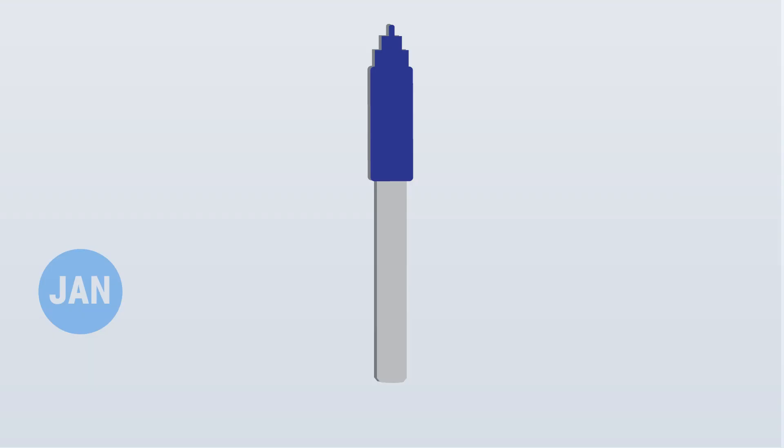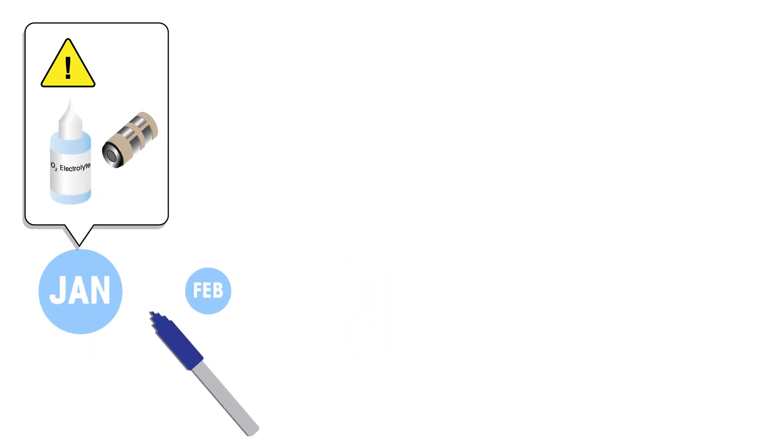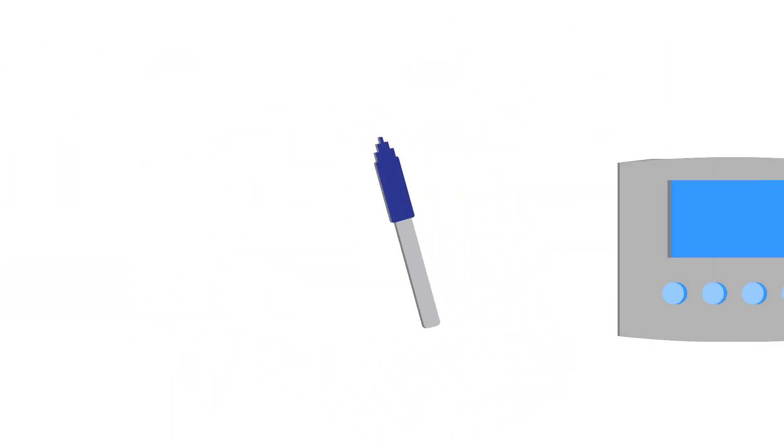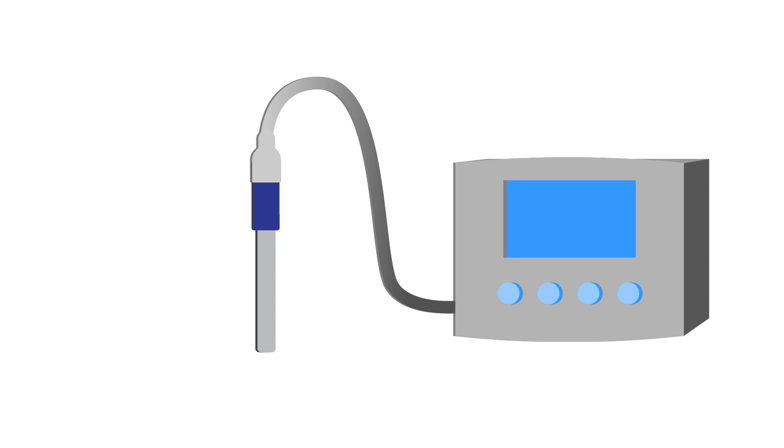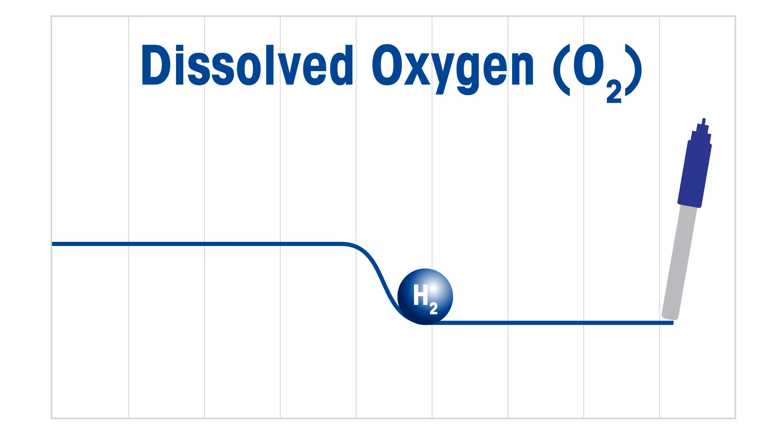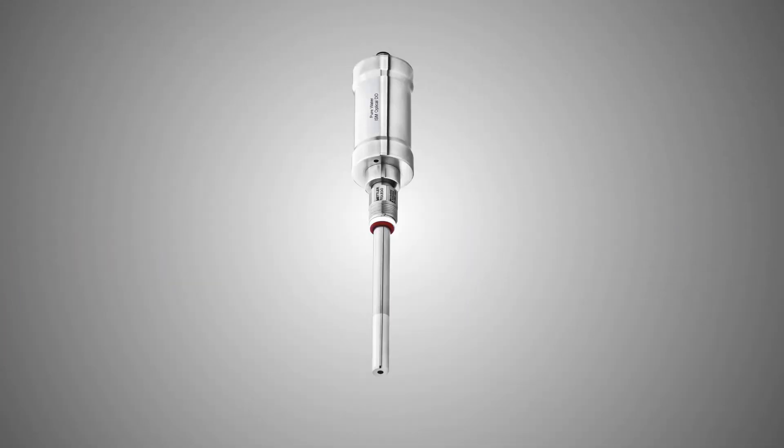Depending on the operating environment, polarographic sensors can require monthly electrolyte and membrane replacement. After service, the sensor cannot produce meaningful readings for several hours because of required polarization. They are also sensitive to sample flow rate and experience interference from dissolved hydrogen.